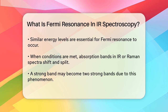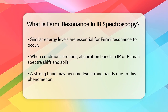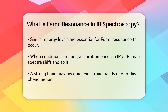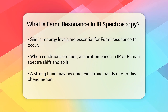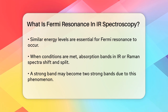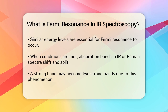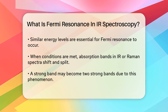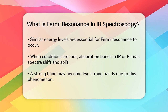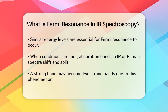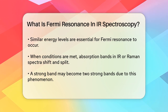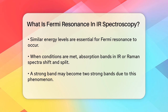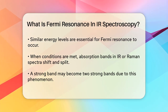When these conditions are met, something fascinating happens. The energies and intensities of the absorption bands in the IR or Raman spectrum start to shift. Imagine two bands that would normally appear as one strong and one weak band. Due to Fermi resonance, these bands split and shift in frequency — the high energy mode moves to an even higher energy, and the low energy mode moves to a lower energy.